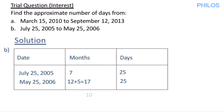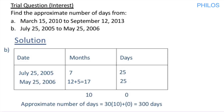For approximate days, each month is assumed to be 30 days. So multiply 30 by the month difference of 10, plus the day difference of 0: 30 × 10 + 0 = 300. The approximate number of days from July 25, 2005 to May 25, 2006 is 300 days. That's how to find approximate number of days. In the next video we'll take another question on this topic. Thank you.